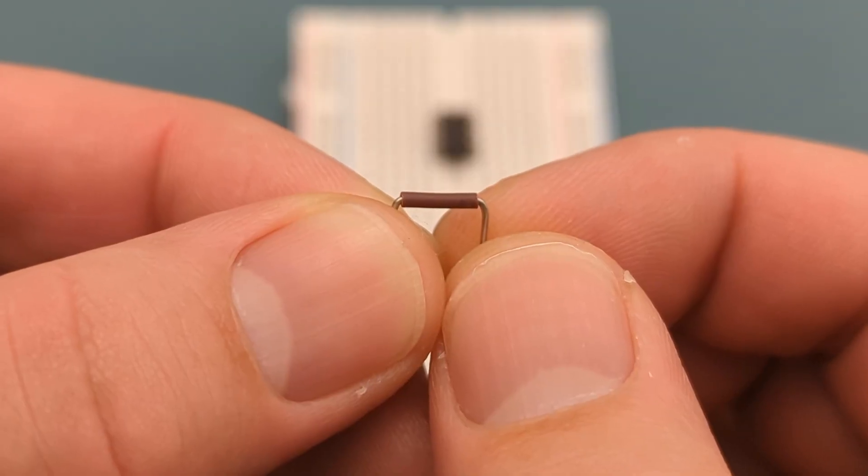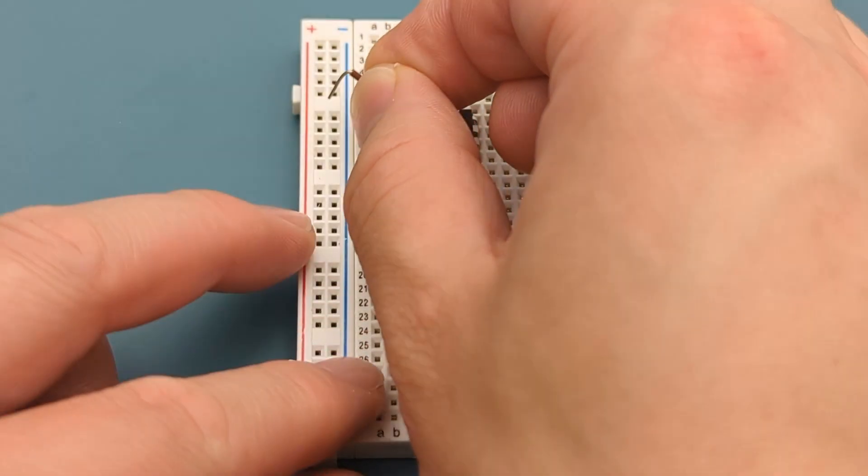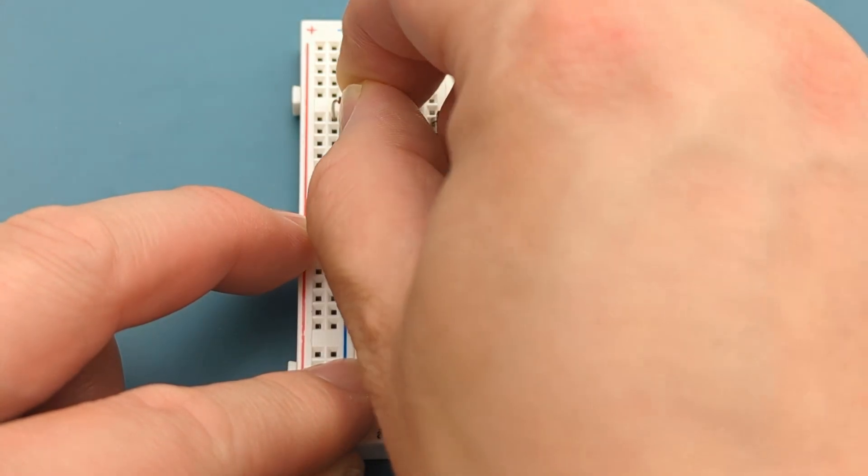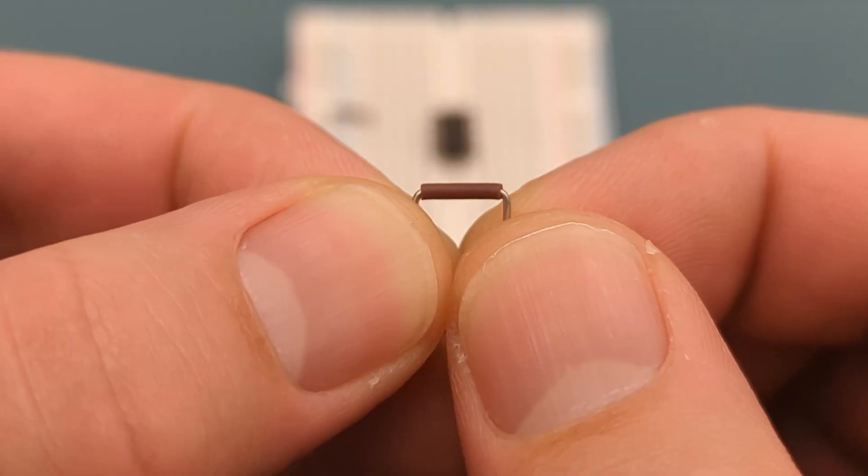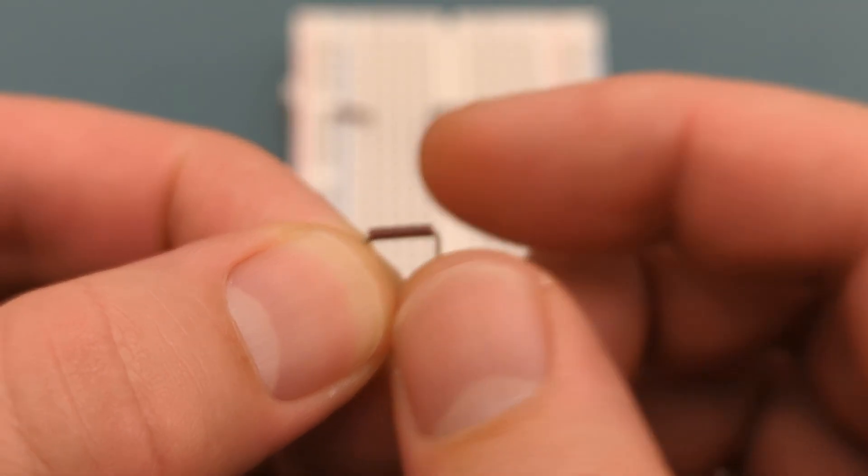A jumper wire connects pin 1 or ground to the negative rail. A jumper wire connects pin 8 or VCC to the positive rail.